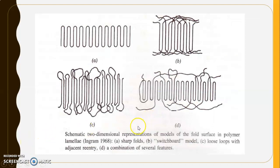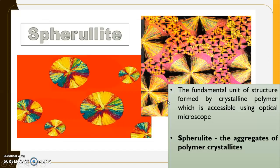A schematic two-dimensional representation of fold surface models in polymer lamella includes: A — the sharp fold model, B — the switchboard model, C — the loose loop with adjacent re-entry, and D — a combination of several features.